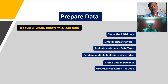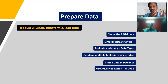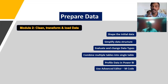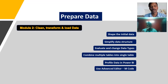This cleaning and transformation also includes data type changes — for example, converting a character field to a number format. We can also combine multiple tables into a single table as per business need. Profiling data refers to assessing data quality. We will also look at the Advanced Editor, which uses M code — the M language — for advanced transformations.